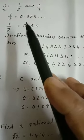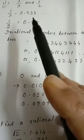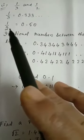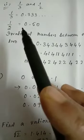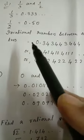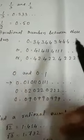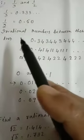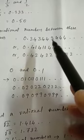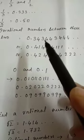1/3 you can write is equal to 0.333 — it will continue — non-terminating, recurring. And half you can write as 0.5, that means 0.50 and it will continue. So the irrational number between these two numbers — you can take 0.343443444 — the numbers will not repeat.